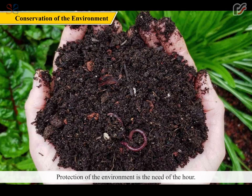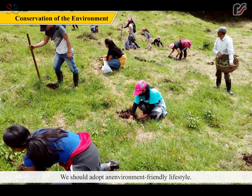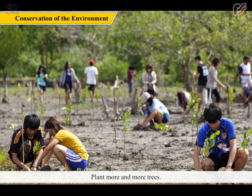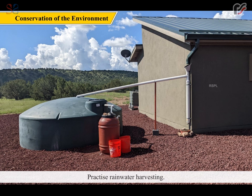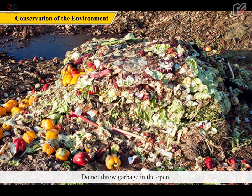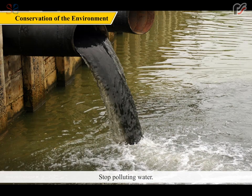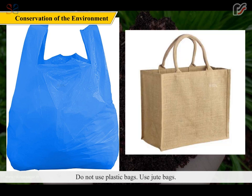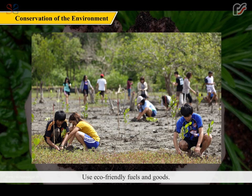Conservation of the Environment. Protection of the environment is the need of the hour. We must save our environment to save the existence of humankind. We should adopt an environment-friendly lifestyle. Some ways to conserve the environment: plant more and more trees, stop deforestation, practice rainwater harvesting, do not misuse natural resources, use solar cells, do not waste electricity, use public transport, do not throw garbage in the open, stop polluting water, do not use plastic bags. Use jute bags and eco-friendly fuels and goods.